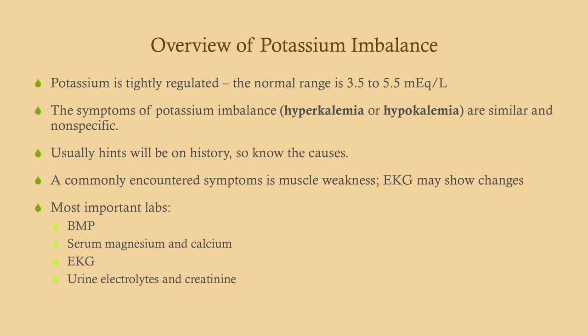The normal range for potassium is about 3.5 to 5.5 — it's very tightly regulated. The symptoms of potassium imbalance are very nonspecific, and the symptoms of hypokalemia and hyperkalemia are very similar if not the same. The most common thing you'll run into is weakness, and the differential for weakness is probably 50 pages long, so usually you're going to detect this on a basic metabolic profile.